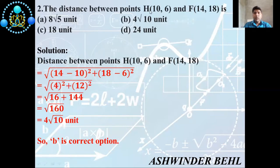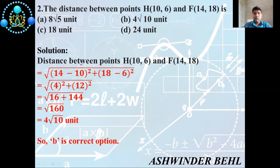Second question: the distance between points H(10, 6) and F(14, 18). There are four options: (a) √805 units; (b) 4√10 units; (c) 18 units; (d) 24 units. Now we discuss the solution.